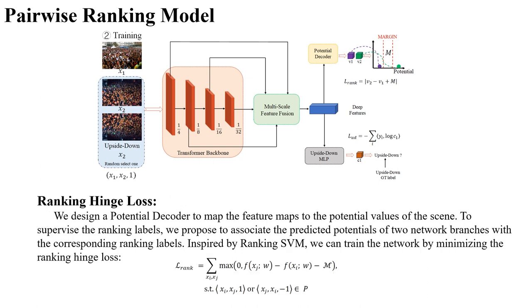We design a potential decoder to map the feature maps extracted by transformer backbone to the potential values of the scene. Through the Siamese network, we can get two potential values. To supervise the ranking labels, we propose to associate the predicted potentials of two network branches with the corresponding ranking labels. Inspired by ranking support vector machine, we can train the network by minimizing the ranking hinge loss.